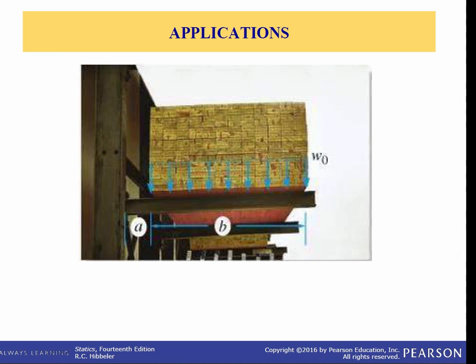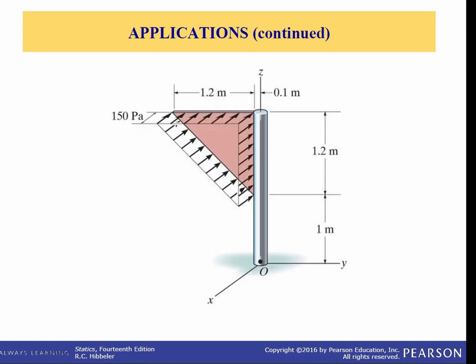Here we have a bundle of boards called a bunk stored on a storage rack. The lumber places a distributed load across the beam as you can see here. To analyze the effect of the load on the beam we need to replace this distributed loading with a single resultant force. Here we have a sign undergoing a distributed load due to the wind, and in order to design the joint that attaches the sign to the post, it will be useful to replace this distributed loading with a single force acting at some point on the sign.